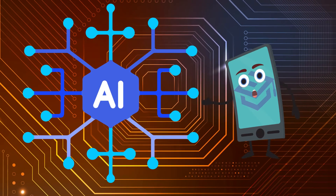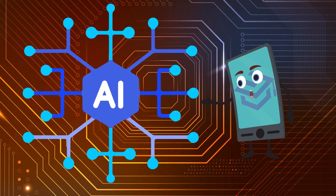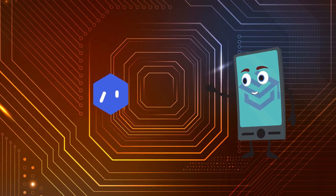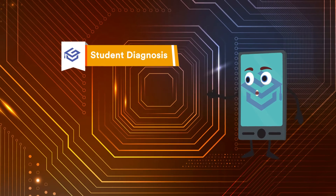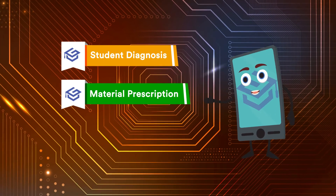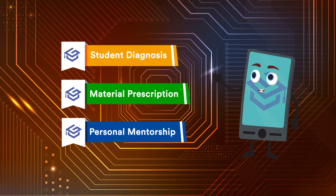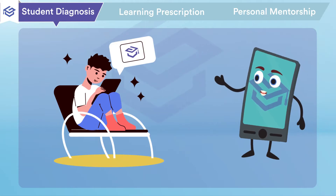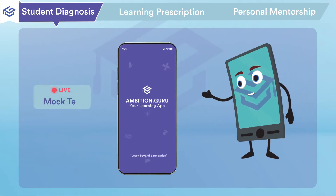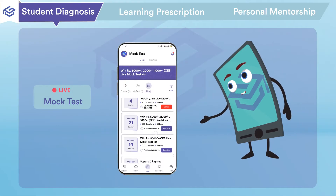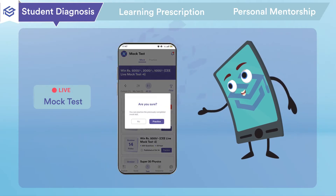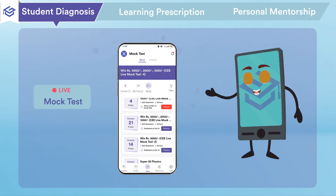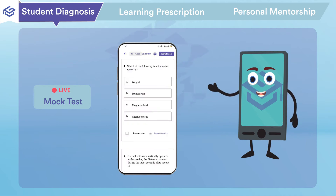You will be able to solve something in the first three ways: Student Diagnosis, Material Prescription, and Personal Mentorship. For Student Diagnosis, with Live Mock Tests, Ambition Guru has a different angle to test students.